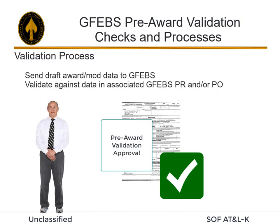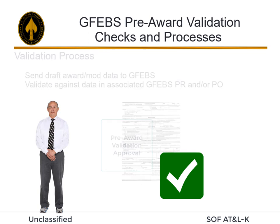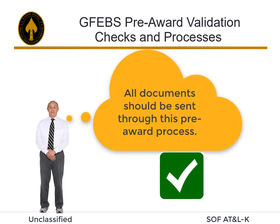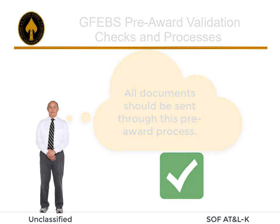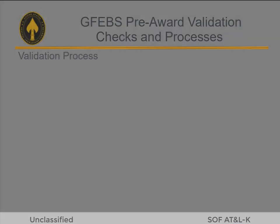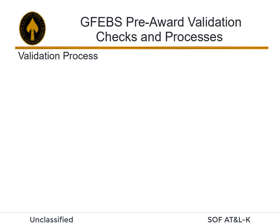The validation process sends draft award mod data to GFIBS to validate that data against the data in the associated GFIBS purchase requisition and/or purchase order. The validation process begins when a user adds the SPS PD2 approval sheet to the award mod document entitled Pre-Award Validation Approval and approves the document.